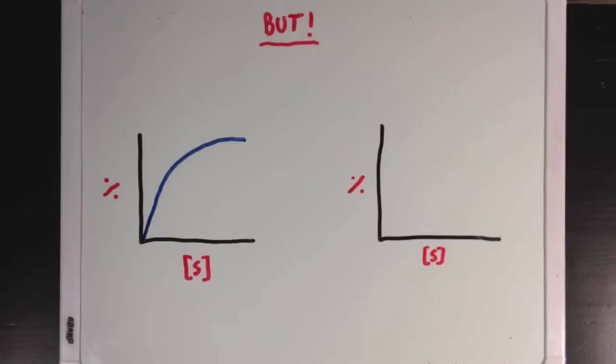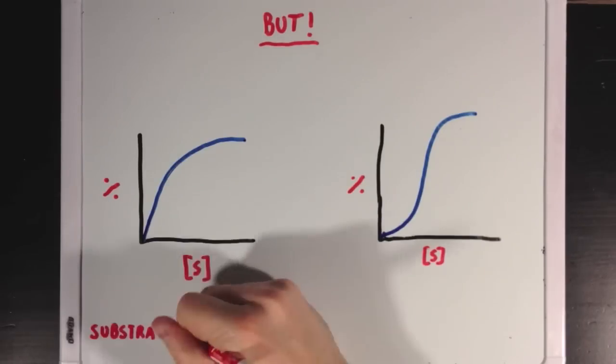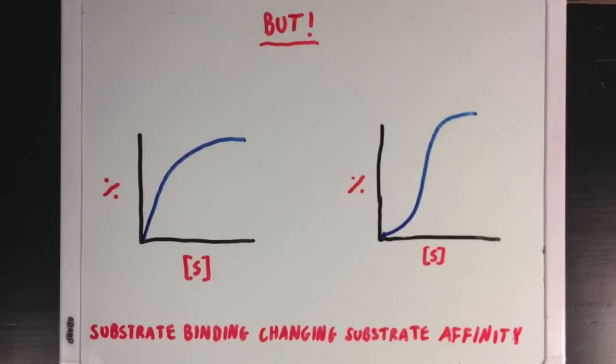Next, I'm going to draw a different curve that you also might see in some enzymes, and that's where substrate binding happens more quickly as binding sites become occupied. Substrate binding changes substrate affinity, and we call this cooperativity.